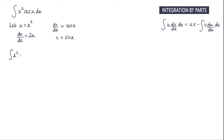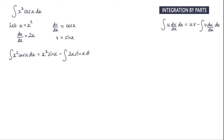The integral of x squared cos x dx is equal to u multiplied by v, so that's going to give me x squared sin x, minus the integral of v multiplied by du by dx — so that's 2x sin x with respect to x.